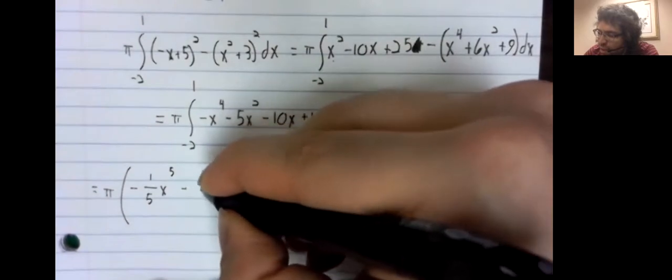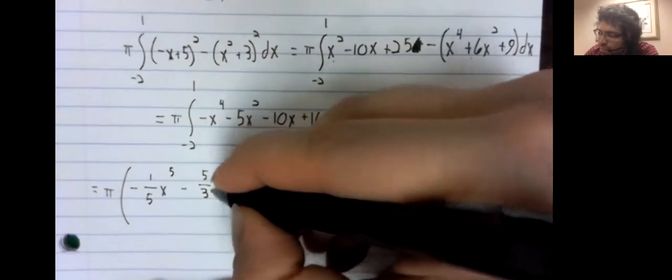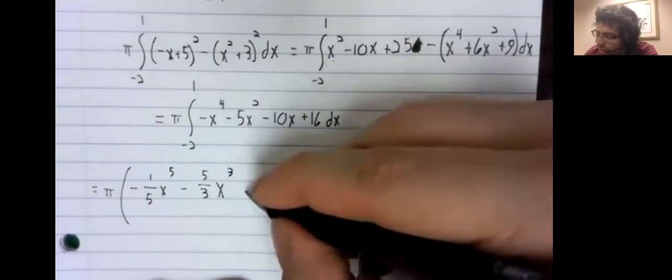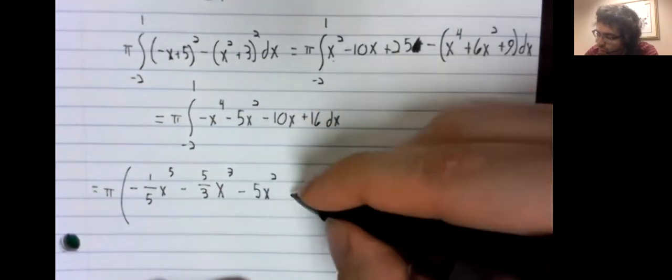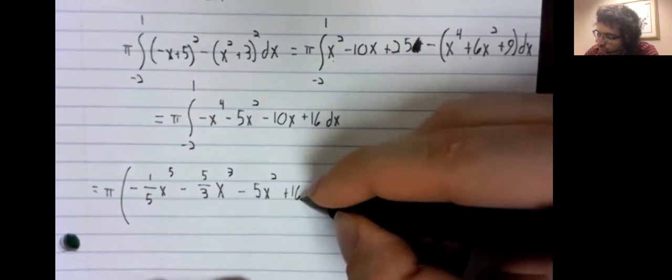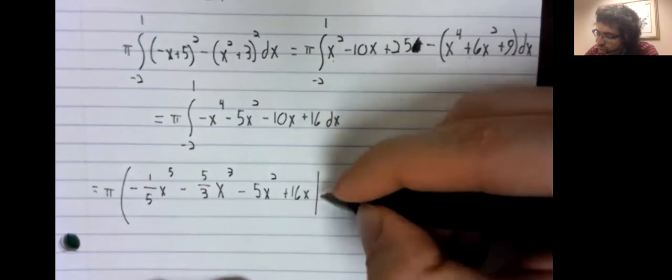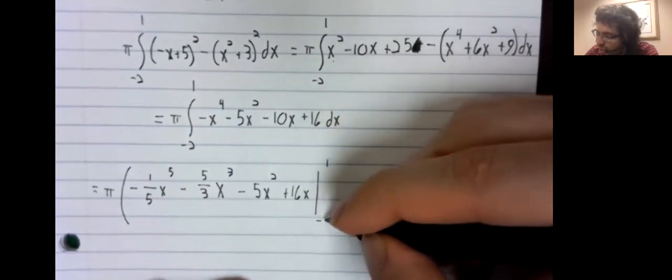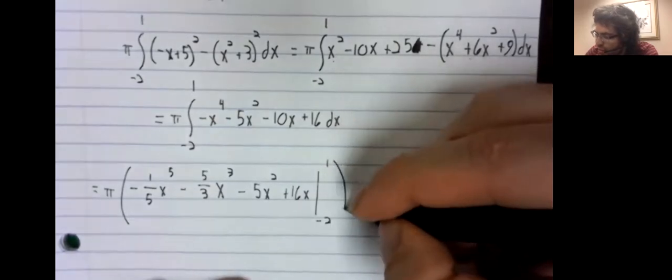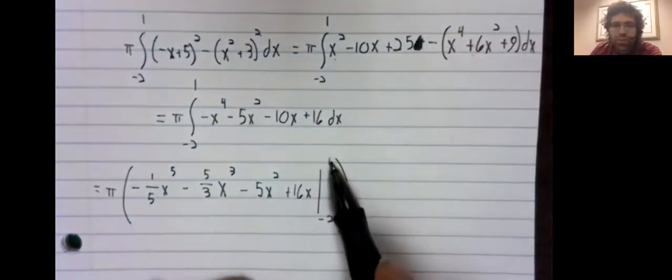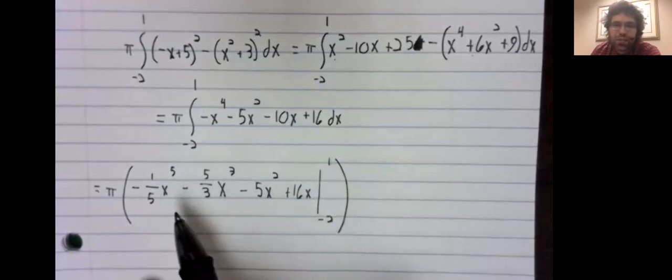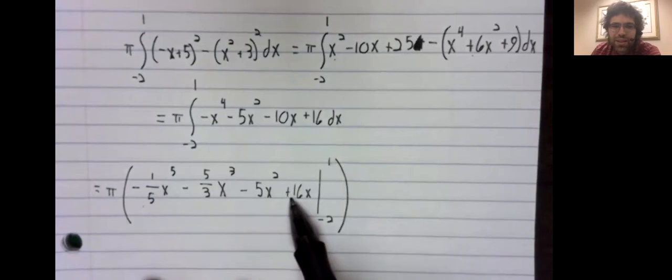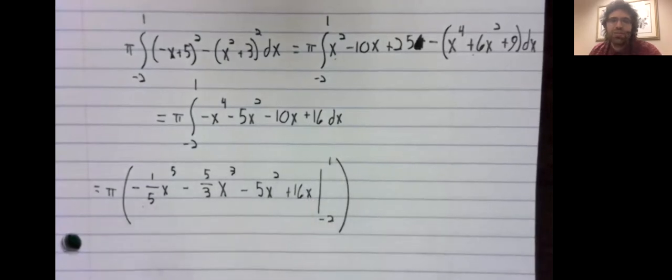Where things get slightly tedious is sticking one in here and then sticking negative two in here and subtracting the result.